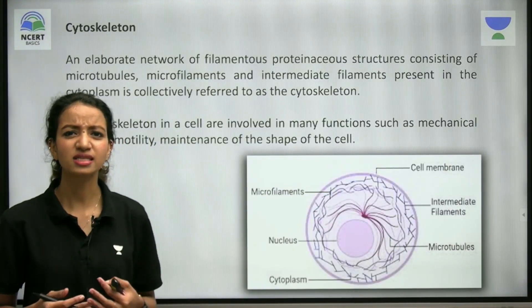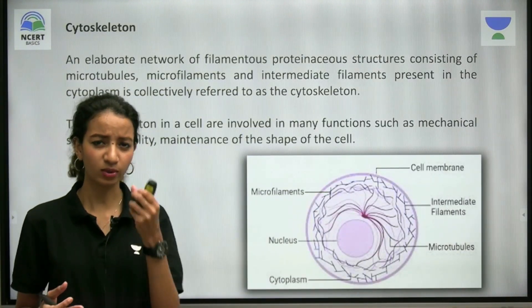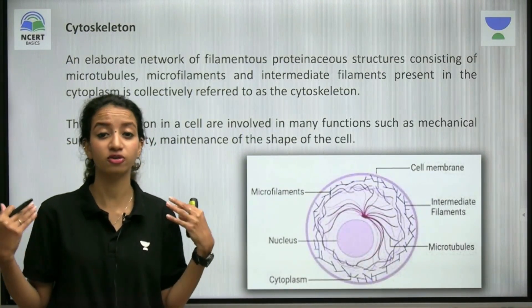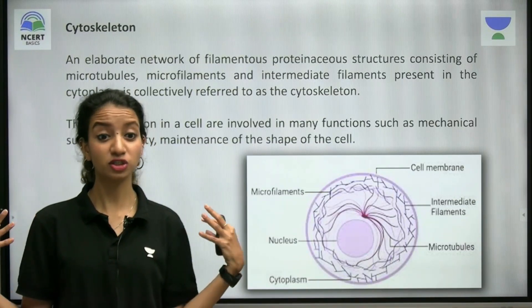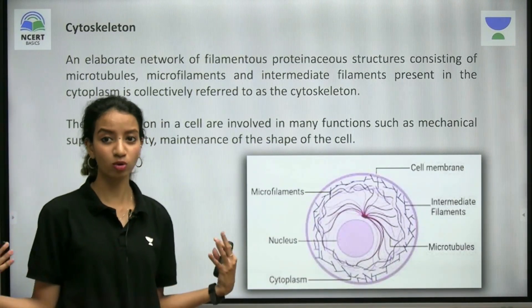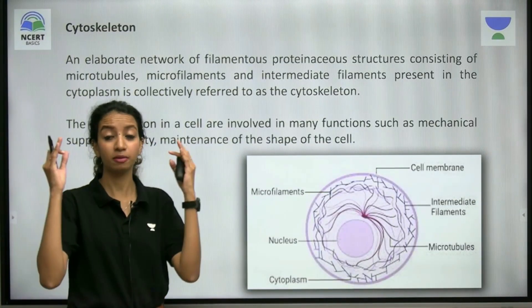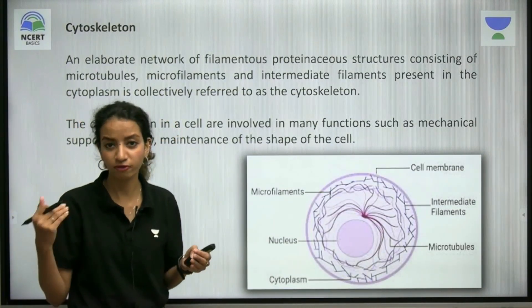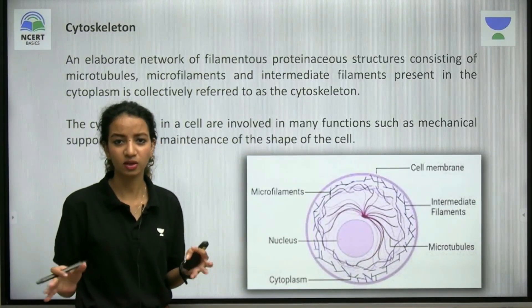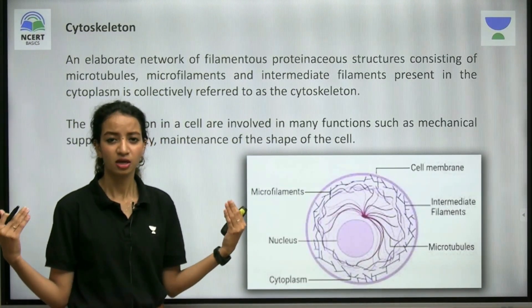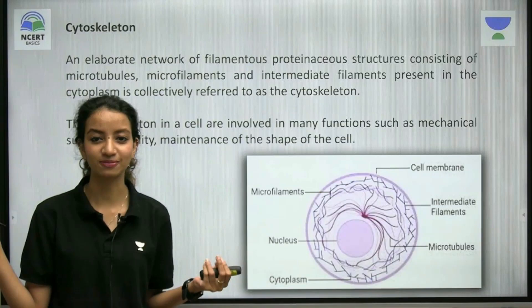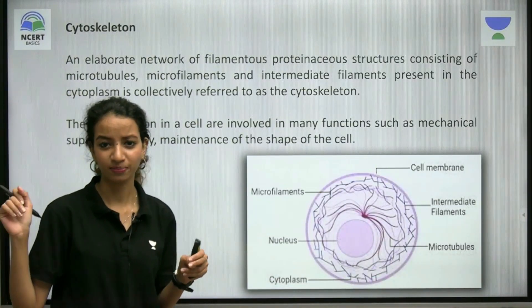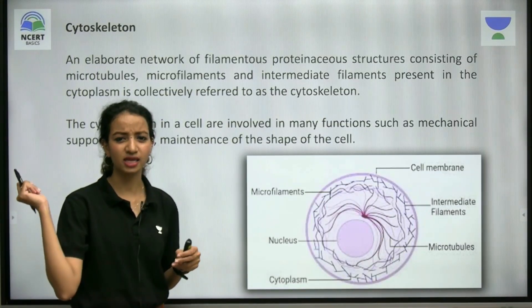What is actually cytoskeleton? You know, like we have a skeleton which is the supporting structure of our body. We have our shape because we have bones, which form the skeleton. The entire structural framework of our body is because of the skeleton only — we have this erect, upright posture because of our endoskeleton, the skeleton which is seen inside the body.